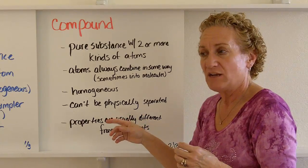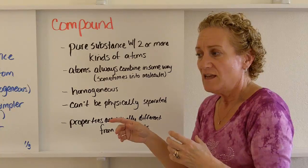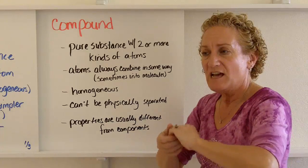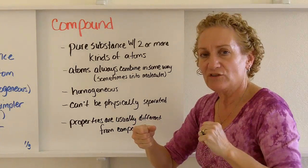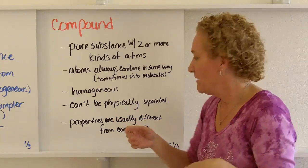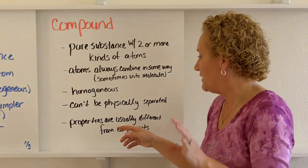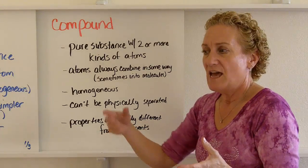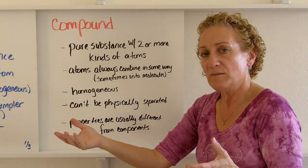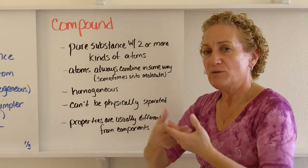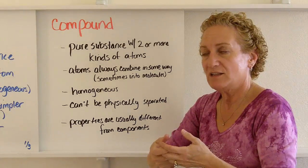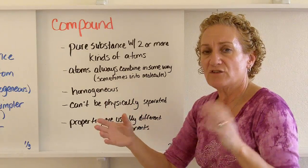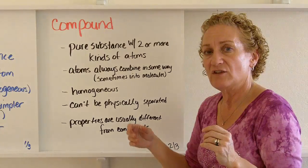Compounds can't physically be separated. If I have table salt — sodium chloride — I can't find a way to separate it back into that metal and that gas again. And finally, the properties of a compound are usually totally different from its components. Sodium and chlorine each have their own characteristics, but when you put them together they form sodium chloride, which is table salt, and its characteristics are totally different from either sodium or chlorine. That's usually a good indication that you have a compound.